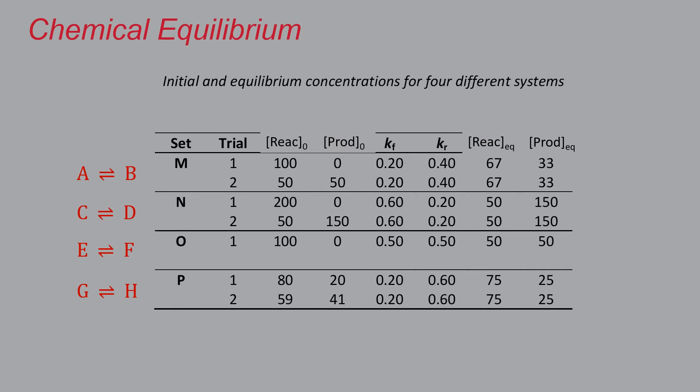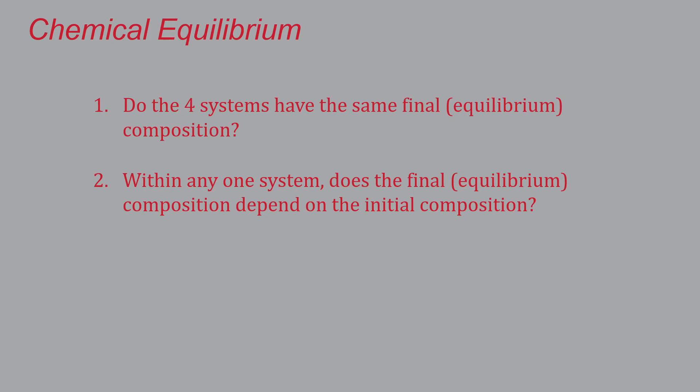With that data in hand, let's answer these questions. First one is: do the four systems have the same final equilibrium composition? That one's easy—no, they're all different. The next question is: if you look at one system in particular, does the final equilibrium composition depend on the initial composition? There are three of those four that have two runs. They always have different initial compositions, but the final ones are the same. So our formal answer is no, it doesn't seem to depend on the initial composition.